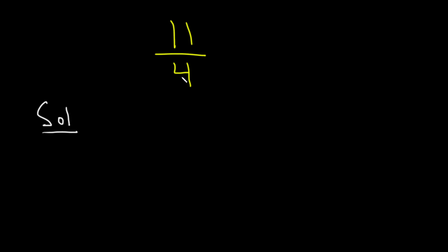You have to think about how many times four goes into 11. Well, two times four is eight, and three times four is 12, so that's a little bit too much — it doesn't quite go in three times. 11 is not big enough, so two times four is eight, meaning it goes in twice. That's going to be the whole number part of your mixed number, because two times four is eight, so it definitely goes in twice.